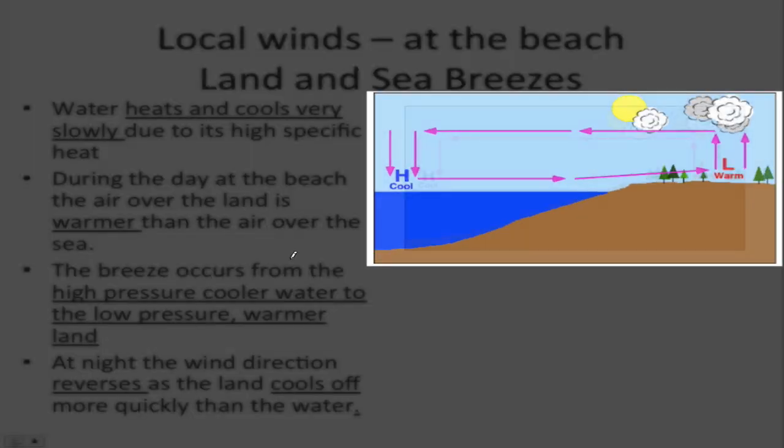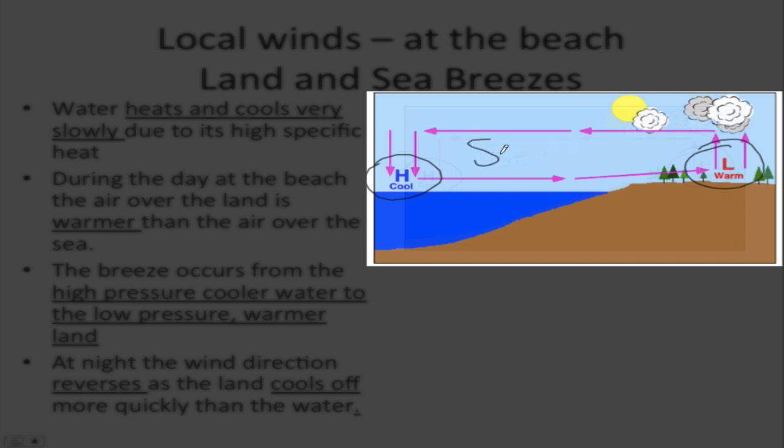During the day, land heats much faster than water, creating a low pressure over the land. So, there's my low pressure because it's warm. Water, on the other hand, is cool and therefore is my high pressure area. So, wind always travels from where to where? Well, it always travels from high to low. So, during the day, we have air moving from the water to the land, which is called a sea breeze.